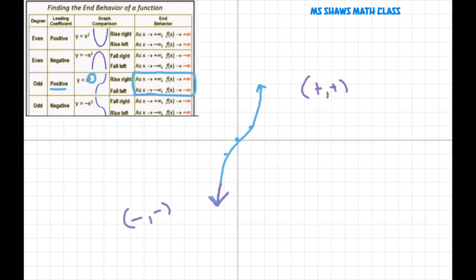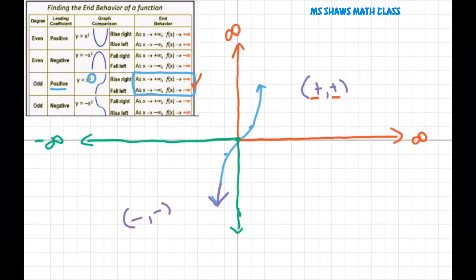And all this means right here is that this is positive, positive. So as x gets larger and larger to infinity, so does my y. It also gets larger and larger. Also, as x values get smaller and smaller towards negative infinity, then so does my y.